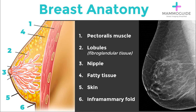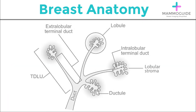The breast is composed primarily of fatty tissue with a varying amount of fibroglandular tissue. If you dive a little bit deeper into the anatomy, you have a branching network of ducts that start at the nipple and course back through the breast — main ducts that branch to smaller and smaller ducts, ultimately culminating in the terminal ducts.